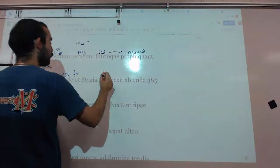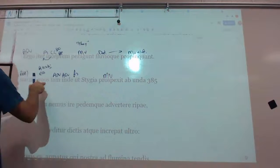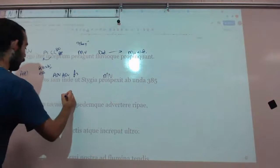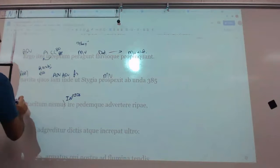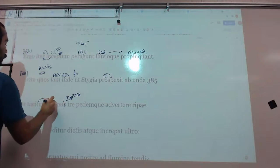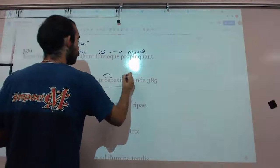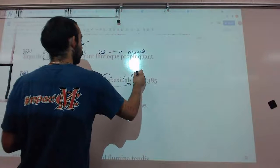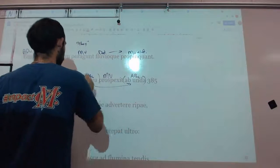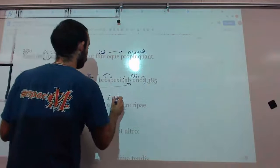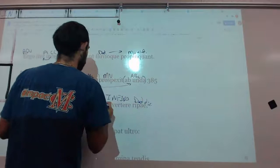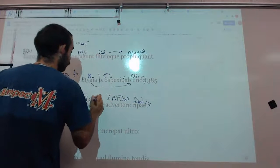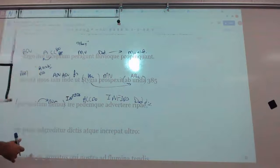As the nauta prospexit, he noticed that they, ire is our first infinitive in the indirect statement here, that they go per tacitum nemus, through the quiet grove from the Stygian wave, ablative that goes with prospexit. And this infinitive in the indirect statement, in this accusative direct object, they turn their feet to the riverbank. So in other words, he saw them coming, approaching them, and he says thus, sooner.